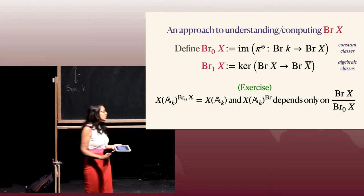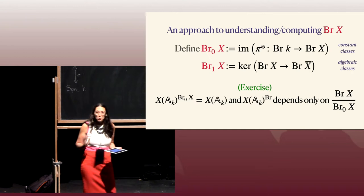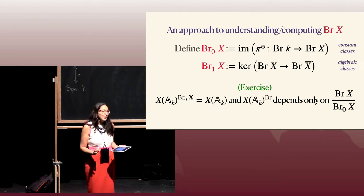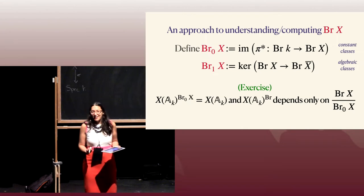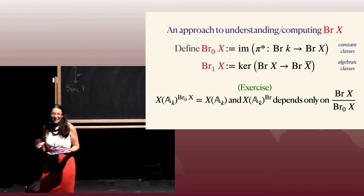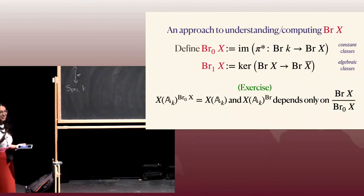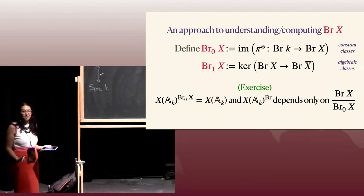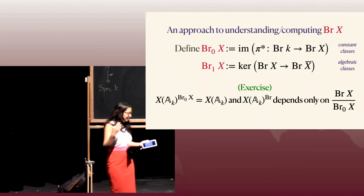I will try to say 'Brauer quotient' over and over again instead of 'Brauer group,' but I predict I will often fail. So you can ask if it's unclear, but you should also just think: everything is about the Brauer quotient. Any questions?